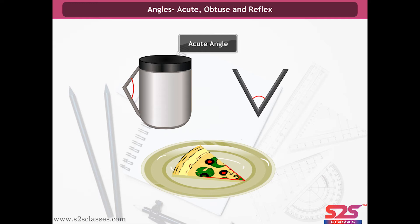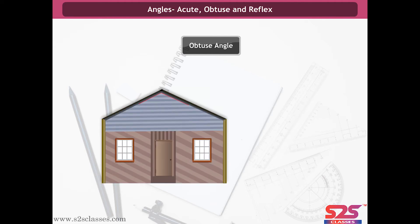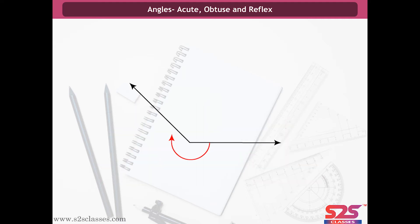Also, there are angles which are greater than a right angle but smaller than a straight angle. Such angles are called obtuse angles. For example, a rooftop, a Chinese fan, etc. An angle which is greater than a straight angle and less than a complete angle is known as a reflex angle.